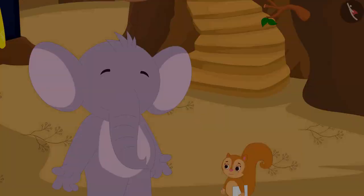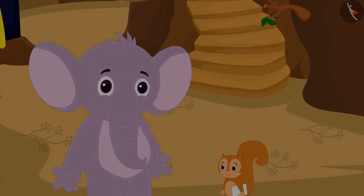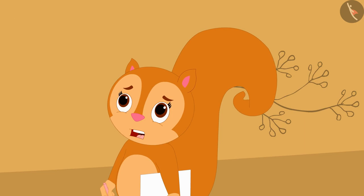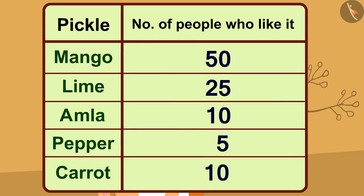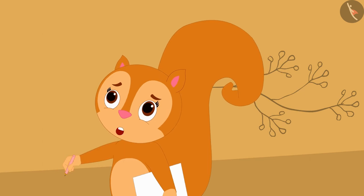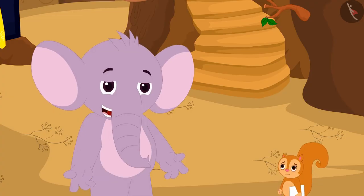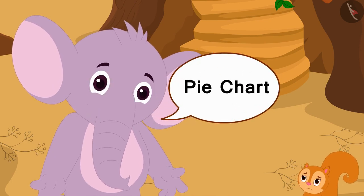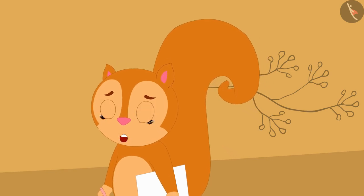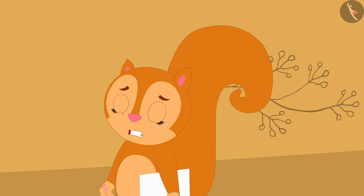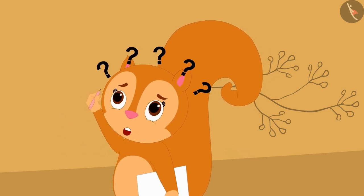They returned to Chanda's house. Chanda says, 'I'm tired of wandering around the village all day, and now I don't understand anything after seeing so many numbers. Is there any way we can understand all this information at one glance?' Appu says they can illustrate the information using a pie chart. Chanda jokes that Appu is increasing her appetite by mentioning pie, and asks what a pie chart is.